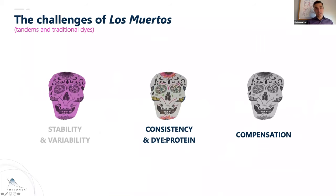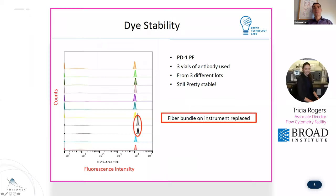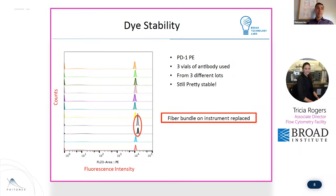The other part of this is consistency. That's variability caused by tandem dyes being unstable. I also want to discuss consistency of manufacturing when we look at tandem dyes. Trish Rogers from the Broad Institute provided some data. They were running a large sorting experiment over six months for a lupus project, pulling single-stain controls over six months to see what variability is down to the antibodies. This is PD-1 PE — you wouldn't expect any differences at all. Three different vials of antibody from three different lots, and even with a fiber bundle replacement on the instrument, it's a very consistent antibody. This is what you should expect because it's just conjugated to PE.